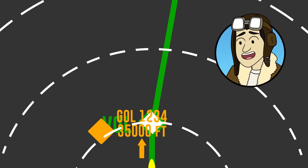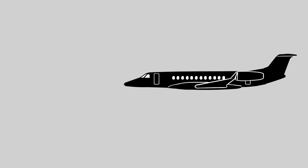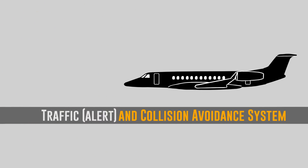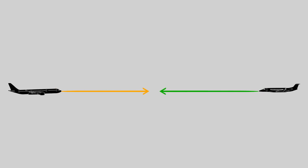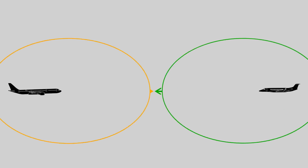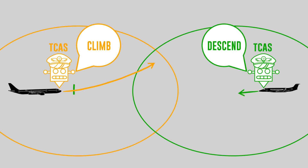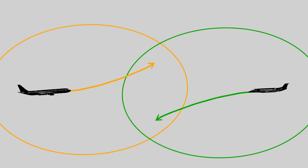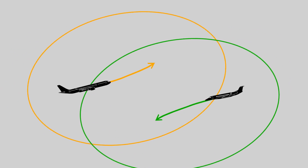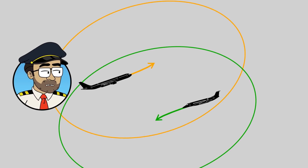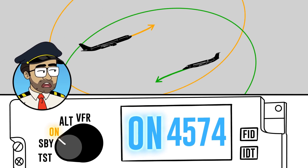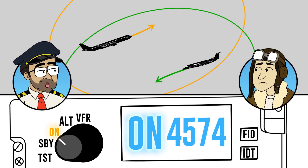That's the traffic alert portion of it. It's also a collision avoidance system — if the two planes are continuing on a route where they're going to intersect with each other, the collision avoidance kicks in and TCAS will tell one plane to climb and the other to descend. It coordinates between the two planes so they both move in a direction where they don't hit each other. This is a frustrating incident because if the transponder and TCAS had been turned on in the Embraer, this would never have happened.